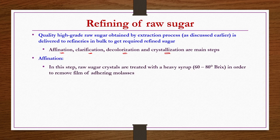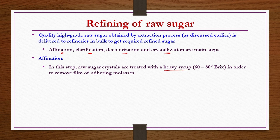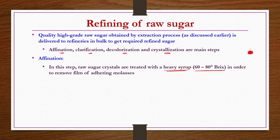Affination is the first step in refining of raw sugar, where raw sugar crystals are treated with a heavy syrup of 60 to 80 degrees Brix in order to remove the film of feathering molasses. The crystals may be brownish in color because the surface is covered with impurities or molasses. This heavy syrup does not dissolve the crystals but softens or loosens the layer of molasses adhering to the crystal surface so it can be removed.